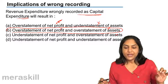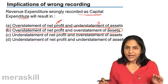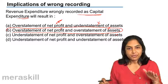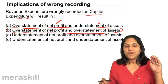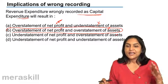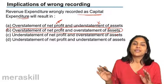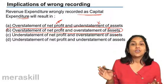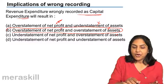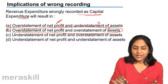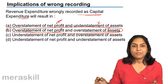To summarize: if a revenue expenditure is recorded as a capital expenditure, if I had taken it as a revenue expenditure, my profit would have come down. Since I did not, my profit is up — therefore there is an overstatement of profits. Second, have we treated it as a capital expenditure, meaning an asset? Yes. It is actually not an asset, so there is an overstatement of assets. Therefore, revenue expenditure wrongly recorded as capital expenditure results in overstatement of net profit and overstatement of assets.